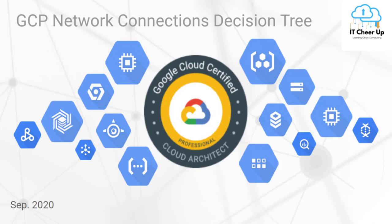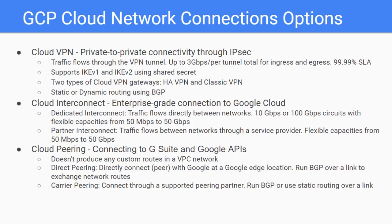In my blog, Last Minute Cheat Sheet for GCP PCA exam, I list four decision trees to help you choose the right service for the questions in the exam. Today, let's walk through the first one: Cloud Network Connections Decision Tree. Google provides Cloud VPN,